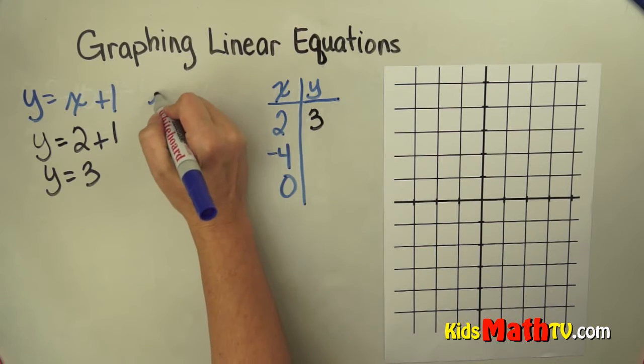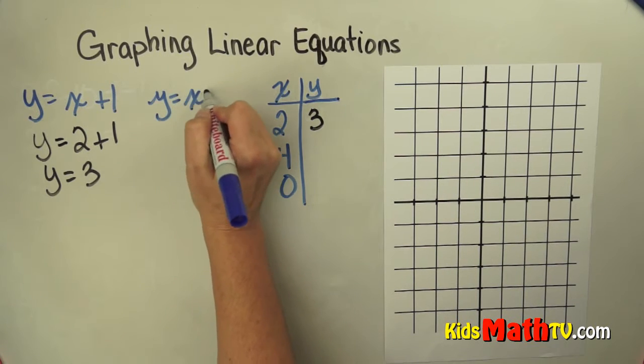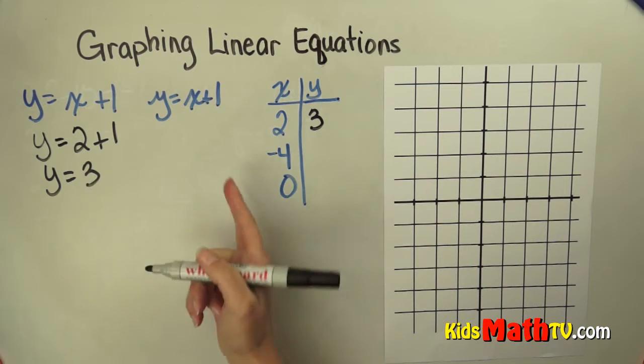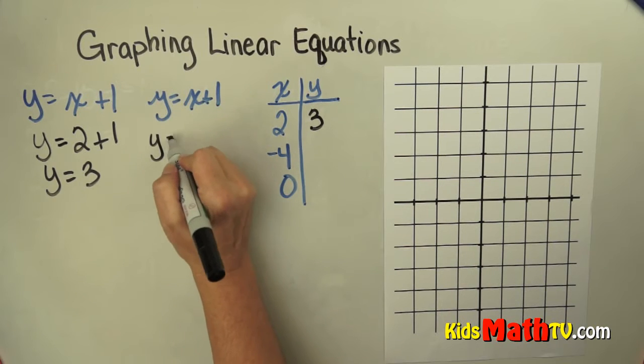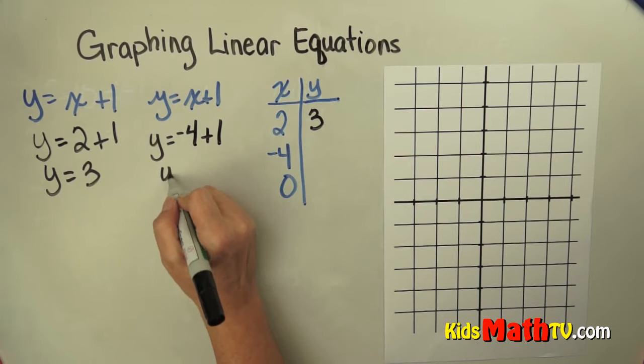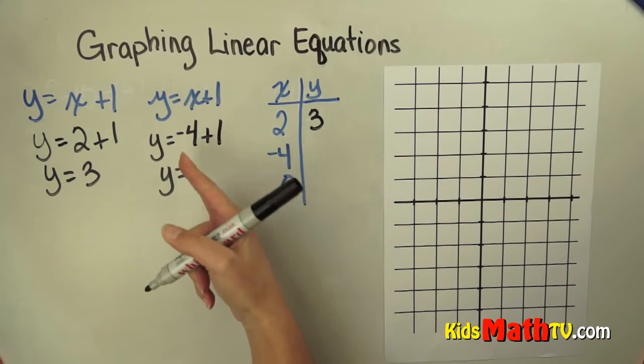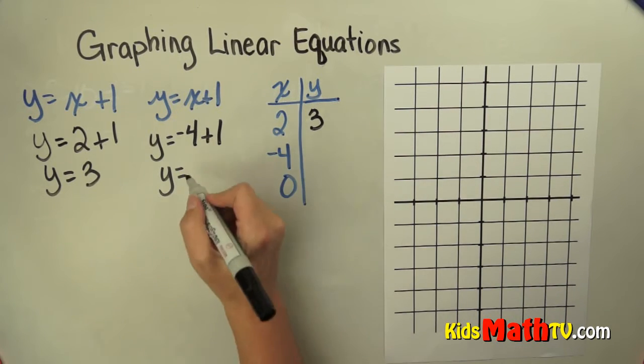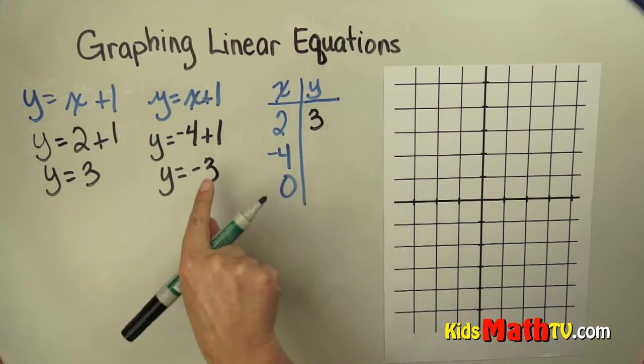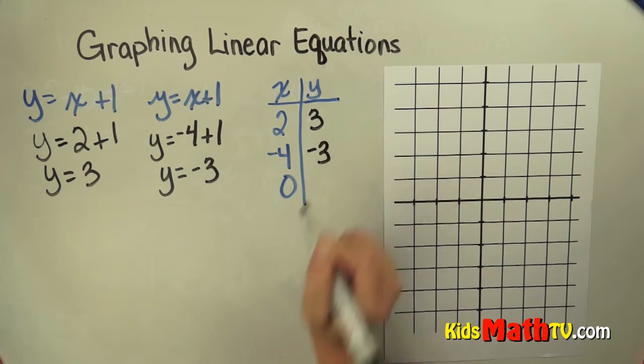So let's try it again, y equals x plus 1. This time we'll use the value of negative 4 for x. y equals negative 4 plus 1. And if I add negative 4 to 1, I get negative 3. So if I have negative 4 as my x, y is negative 3.